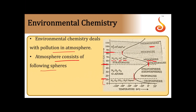Finally, the thermosphere ranges from 85 kilometers to 500 kilometers. It mainly contains O2+, O+, NO+, and free electrons. Temperature ranges from minus 92 degrees Celsius to 1200 degrees Celsius. So the atmosphere mainly consists of four spheres: troposphere, stratosphere, mesosphere, and thermosphere.